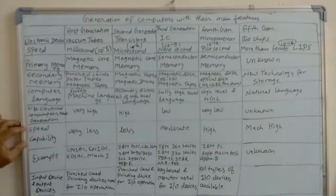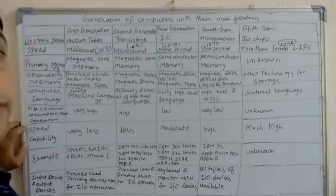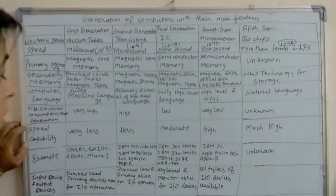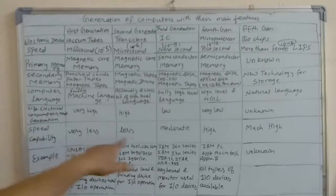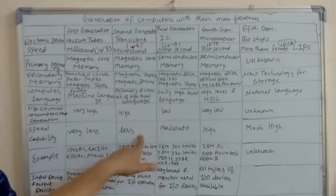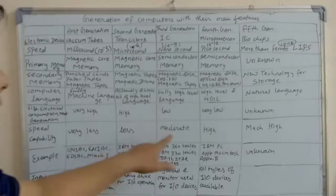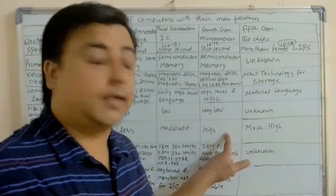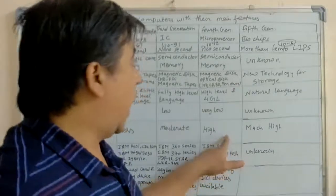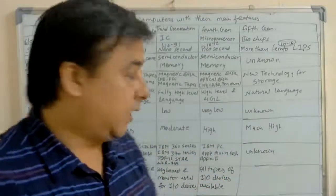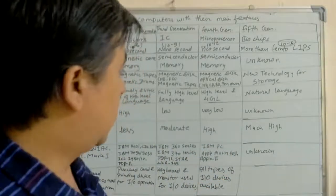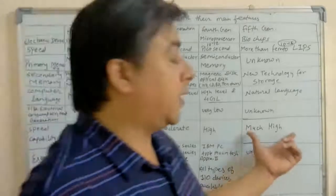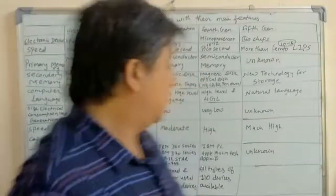Regarding speed capability: the speed of first generation computers was very less. Second generation was less. Third generation was moderate. Fourth generation is high — the speed is high in the fourth generation. Fifth generation will be much higher.